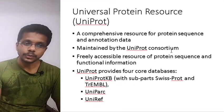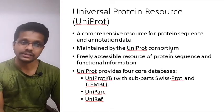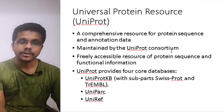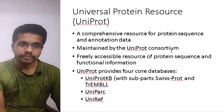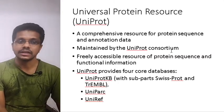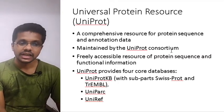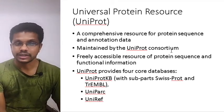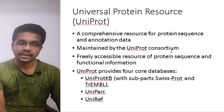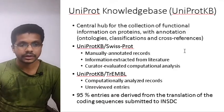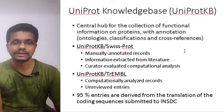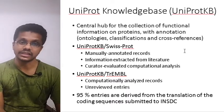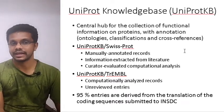UniProt stands for Universal Protein Resource. It is a comprehensive resource for protein sequence and annotation data, maintained by the UniProt Consortium, and is freely accessible for protein sequence and function information. UniProt has four core databases: UniProt KB — which includes SwissProt and TrEMBL — UniProt TRAC, and UniRef. The most important is UniProt KB, where KB stands for Knowledge Base, a central database collecting functional information about proteins with annotations.